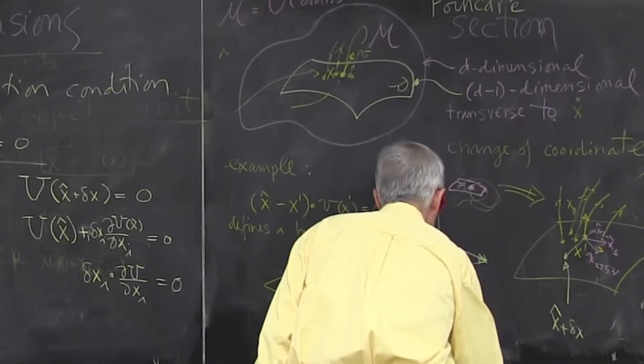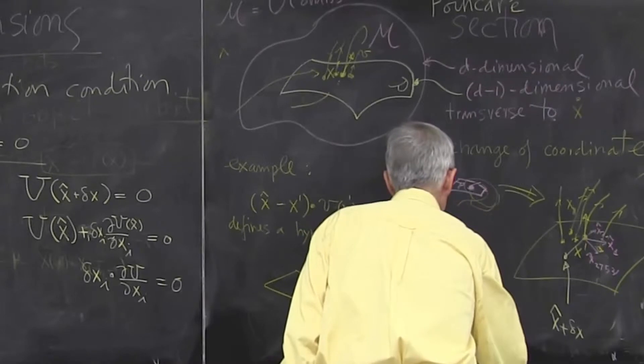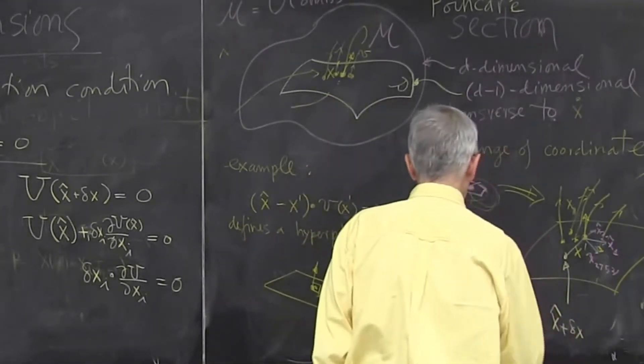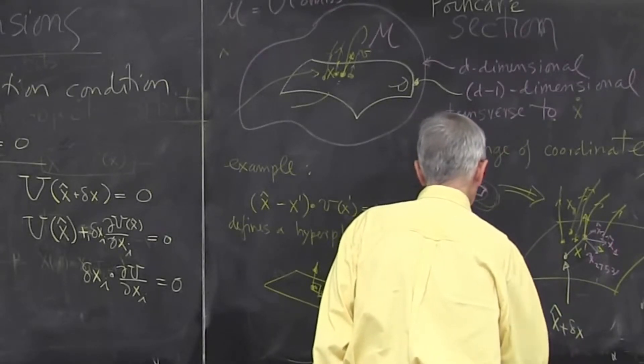So now you actually know from other situations what this gradient is. You know that this defines the normal to the surface. So if at point x prime, I look at the normal vector,